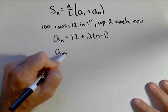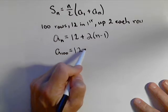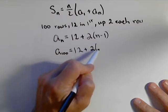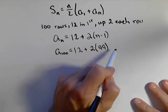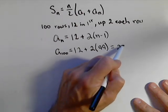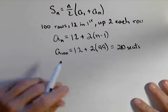The number of seats in the hundredth row is a_100 = 12 plus two times 99, so that gives me 210 seats in the last row. It's a big auditorium.